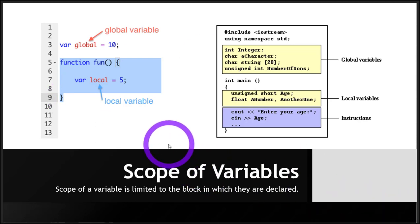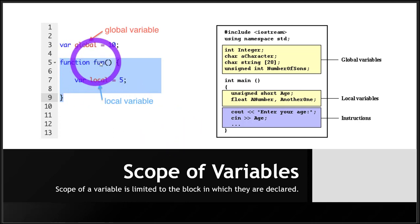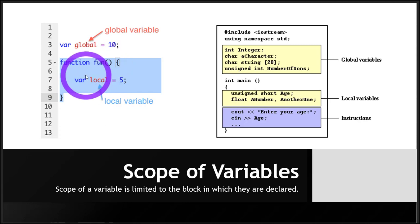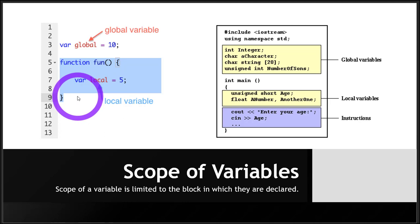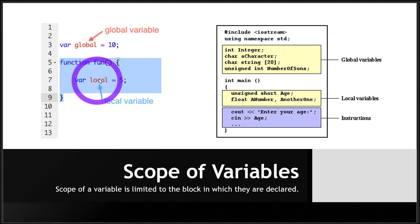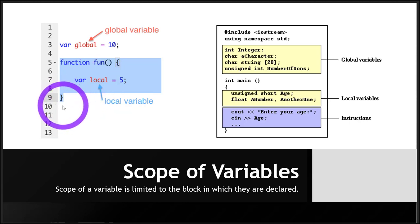When we are learning about functions, scope of variables is very important. What we mean by that is if a variable is defined in some function — we have a function named fun fun — then that variable is only accessible within that function. It goes out of scope after that function. That means this variable cannot be used after this curly bracket here.